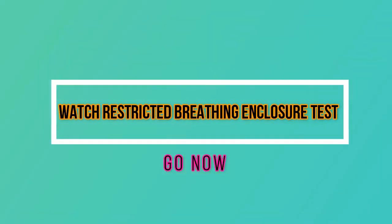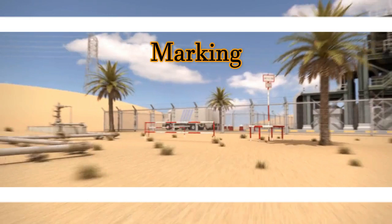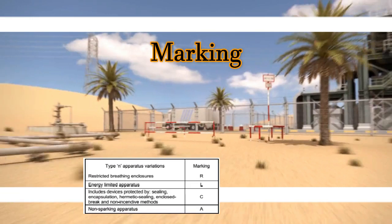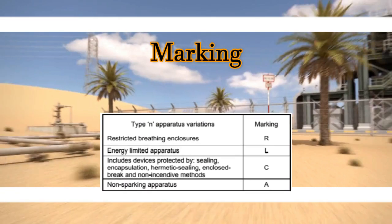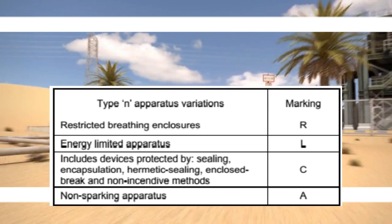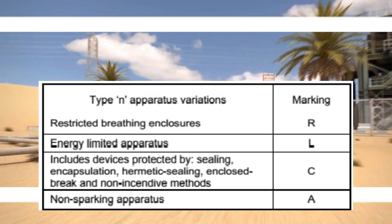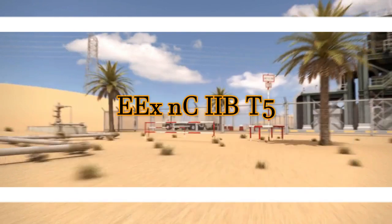There is a video link above illustrating how to do this test. The table shows the marking on Type N apparatus to indicate the method applied to either eliminate or control spark energy and/or hot surfaces. The following is an example of marking applied to Type N apparatus containing sparking contacts protected by another method.